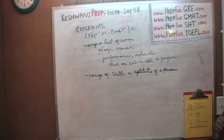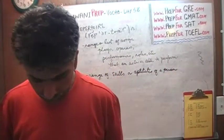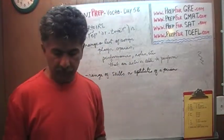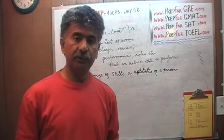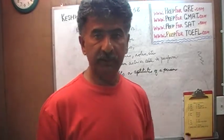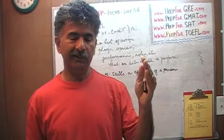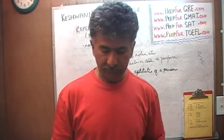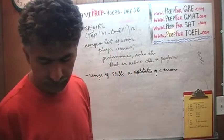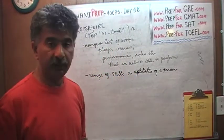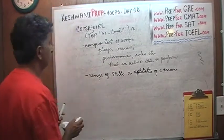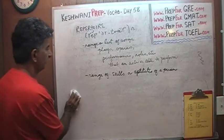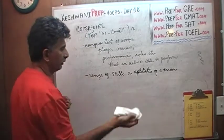The word was repertoire. There are three or four words we're going to cover today, and they have nothing to do with each other. Sometimes I have themes where words are related, but today all the words are completely unrelated. One more time: the word was 'repertoire' — range of skills or aptitude of a person.